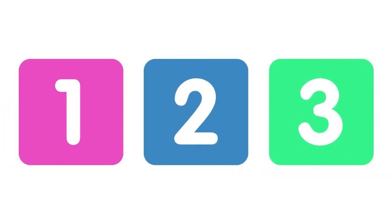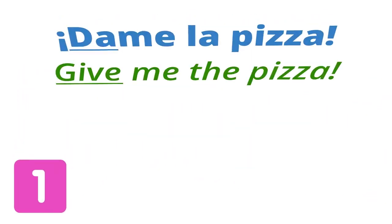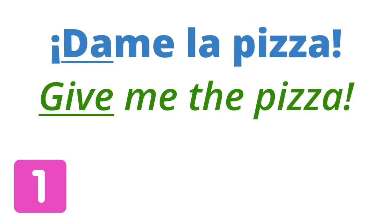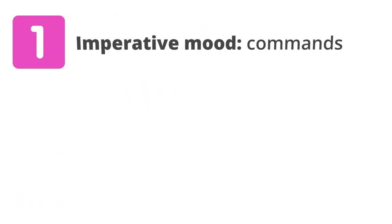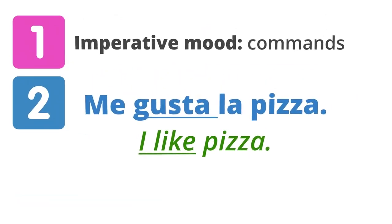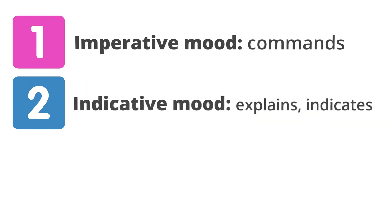The nature of your message is going to fall into one of three broad categories. In English we have up to seven moods, but in Spanish there are only three when it comes to conjugation. If your sentence gives a command, then the nature of it is urgent or imperative, so your verb conjugation falls into the imperative mood. If your message or sentence explains, then the nature of it is simply indicating what the idea is, so its conjugation falls into the indicative mood.